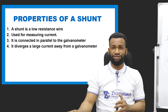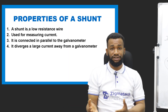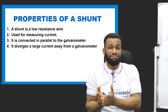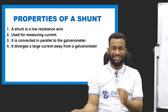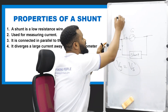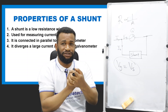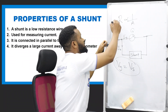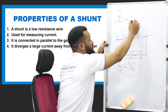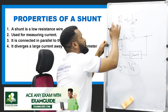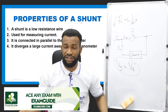In choosing a shunt, you have to know that the shunt is a low-resistance wire. What determines a wire's resistance? Resistance is inversely proportional to the cross-sectional area — the thickness of the wire. If the thickness of the wire is very small, then the resistance is going to be high. If the thickness is very big, then the resistance is going to be low. So for a low-resistance wire, the thickness should be high.